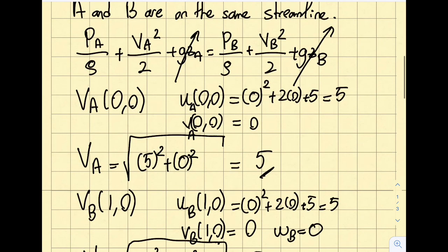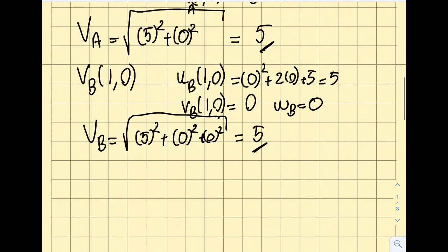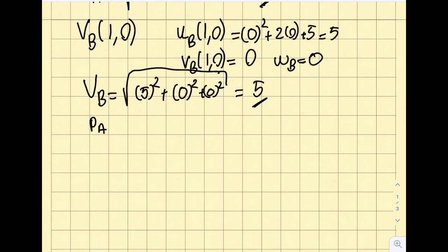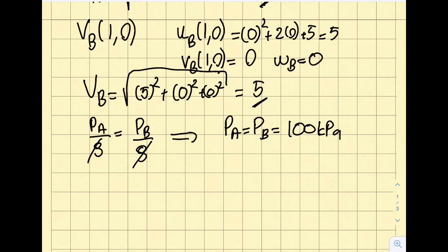So if I go up here, so va and vb will cancel each other. So then what this means is pa over rho will be equal to pb over rho. And from here, as the rows are the same, I will obtain pa is equal to pb is equal to 100 kilopascals. That is what is given in the question statement to me.